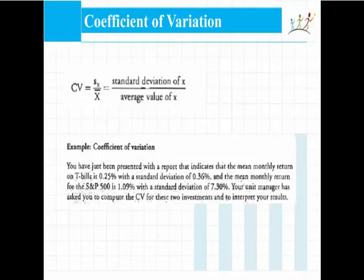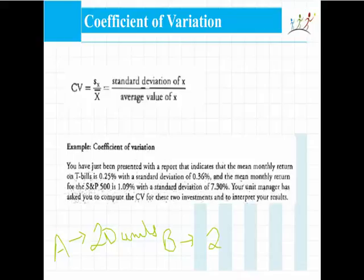A distribution will have a mean and a standard deviation. A standard deviation gives me a sense of how far away from the mean my values are located. One distribution, distribution A, has a standard deviation of 20 units, and another distribution, distribution B, has a standard deviation of 2000 units. Which distribution do you think will be more dispersed — A or B?